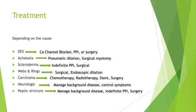There are a variety of treatments, but the choice highly depends on the cause. Treatment could be medical, including calcium channel blockers and PPIs in spasm, or pneumatic dilation or surgical myotomy in achalasia. It could be indefinite PPI and surgery in scleroderma, endoscopic dilation in webs and rings, or chemotherapy, radiotherapy, stent, surgery, or a combination of all four for carcinoma. For neurologic disorders and peptic stricture, we manage the underlying cause and control symptoms with medication.